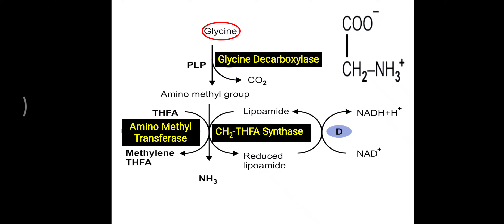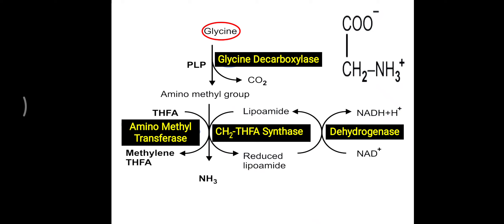The aminomethyl group is transferred to tetrahydrofolic acid, forming methylene-tetrahydrofolic acid (methylene-THFA). For this, aminomethyl transferase and methylene-THFA synthase are needed. The methylene group is transferred to THFA, and ammonia is released separately. So glycine is broken down into three molecules: carbon dioxide, ammonia, and methylene-THFA. During this process, lipoamide is reduced to reduced lipoamide, which is then regenerated by a dehydrogenase enzyme using NAD⁺.